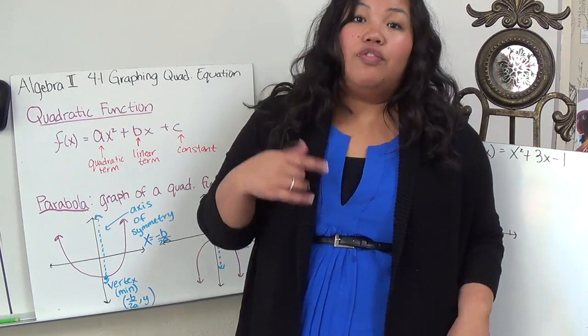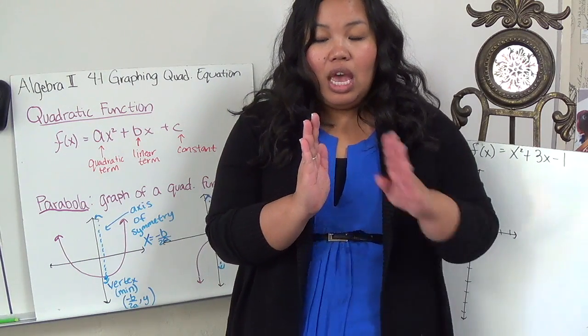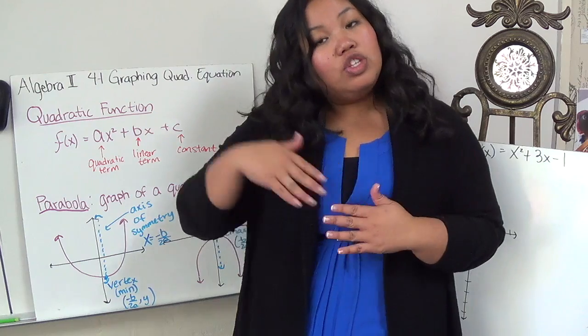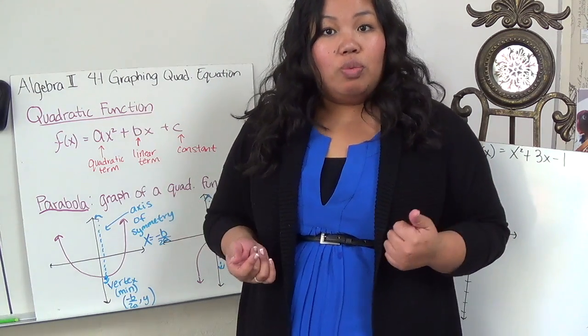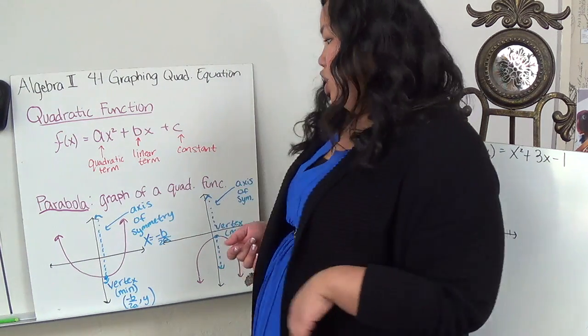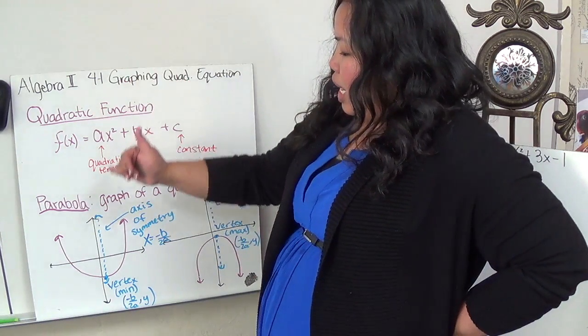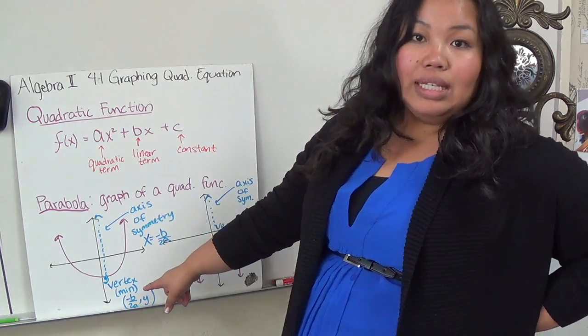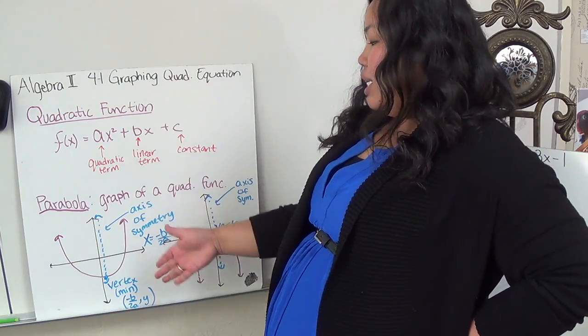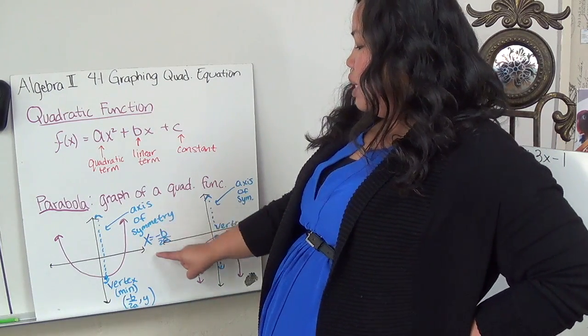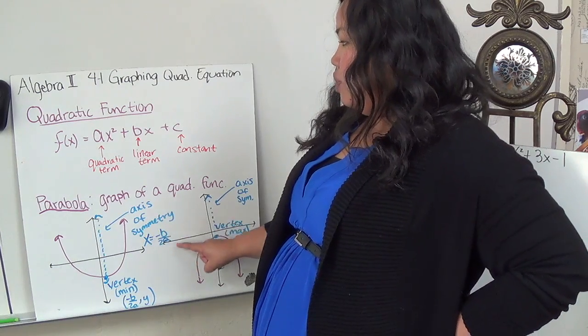This one, you have to first find the vertex, and the vertex tells you where the exact middle is. Then you find two x's on the left and two x's on the right, and those are the four points that you graph, and you should be able to get a u-shaped. The axis of symmetry hits the vertex exactly.